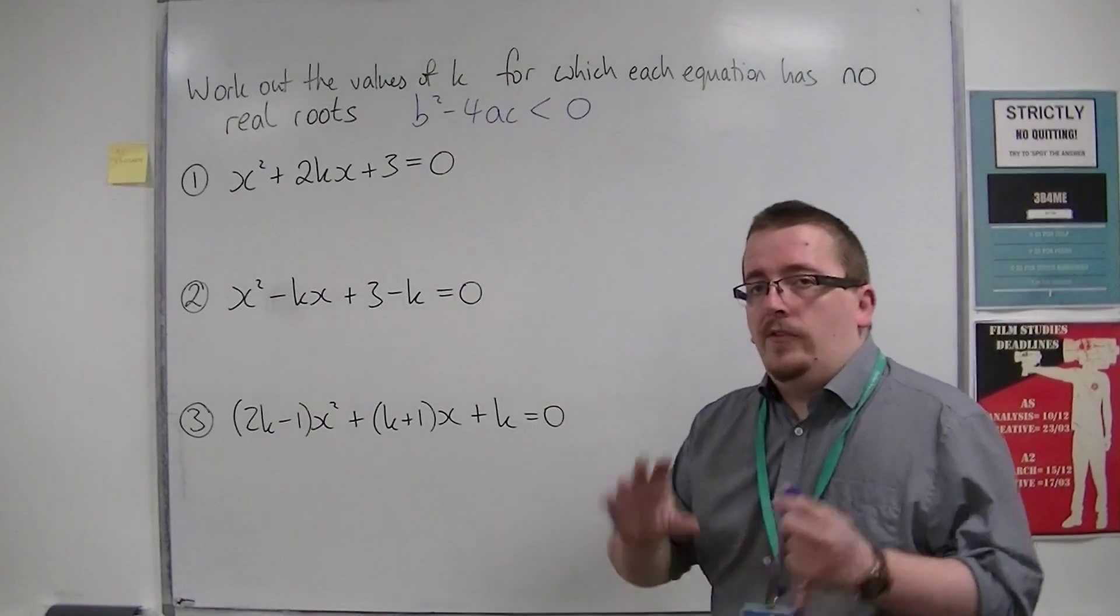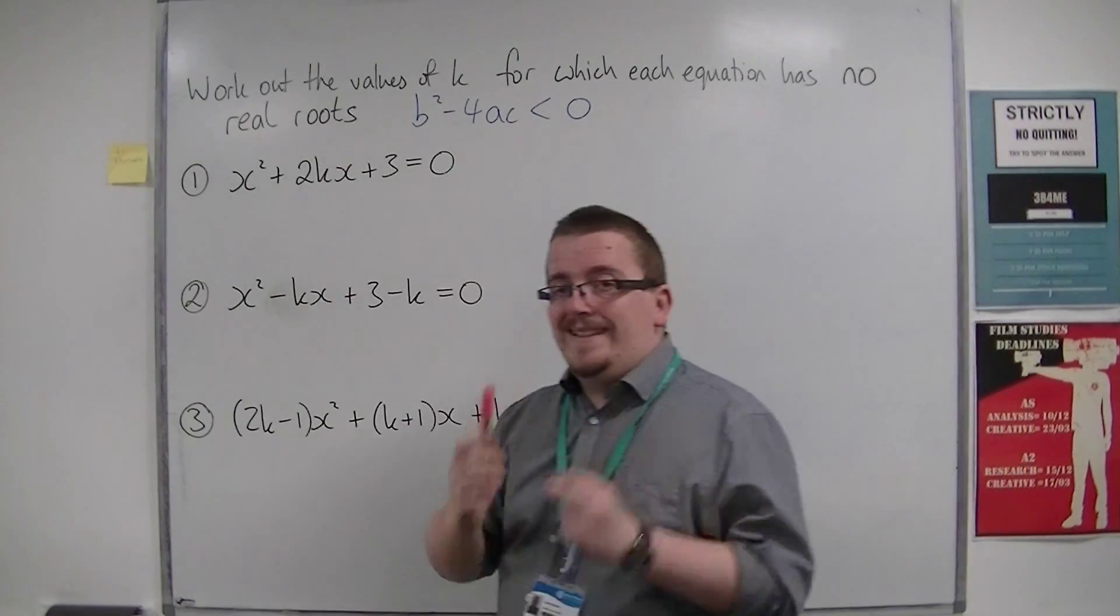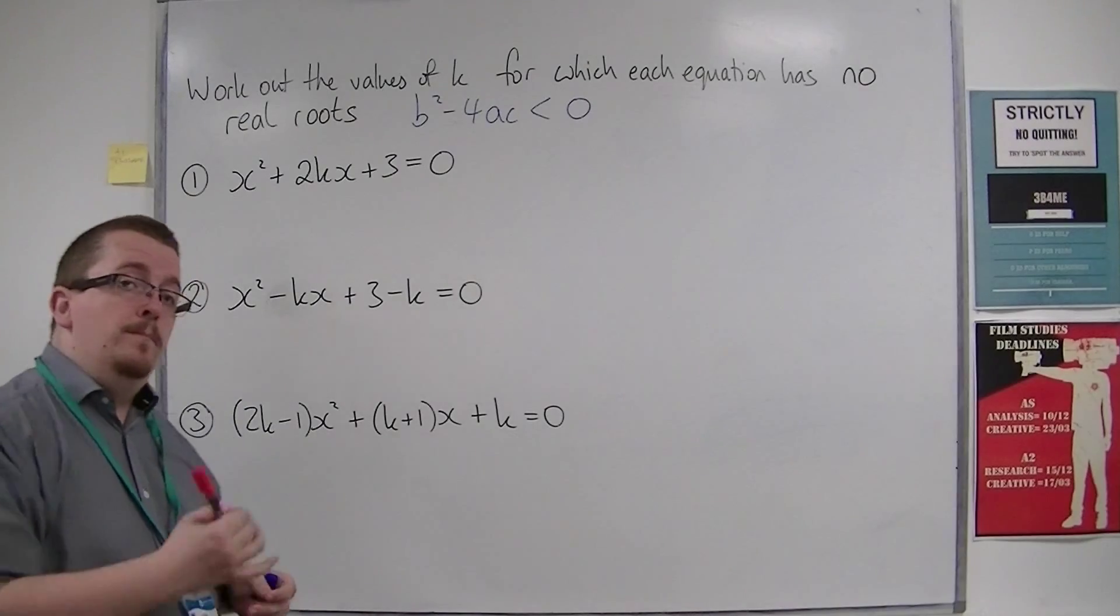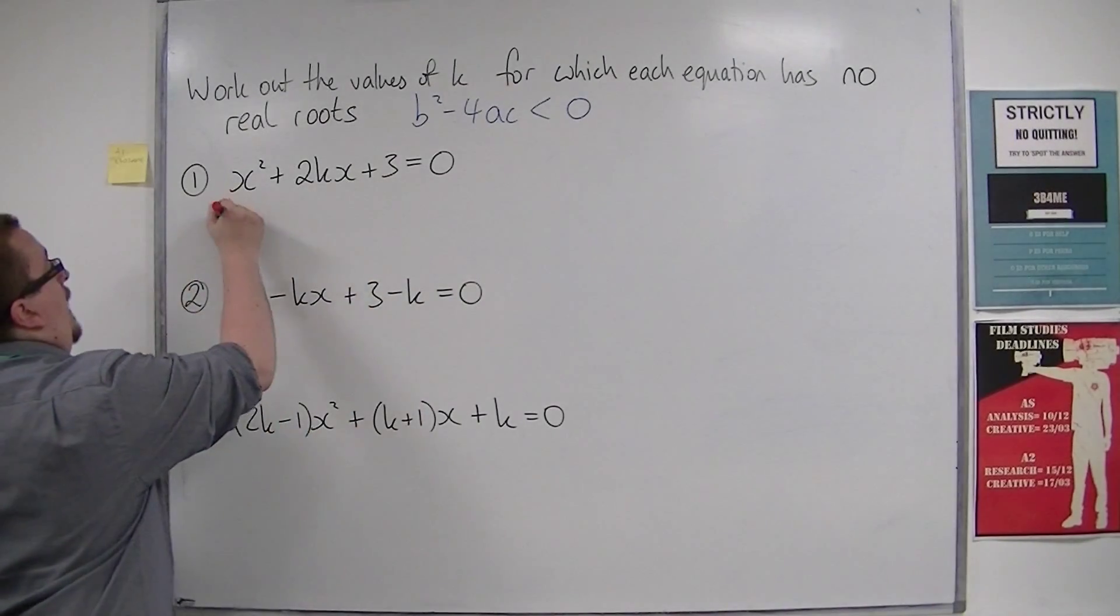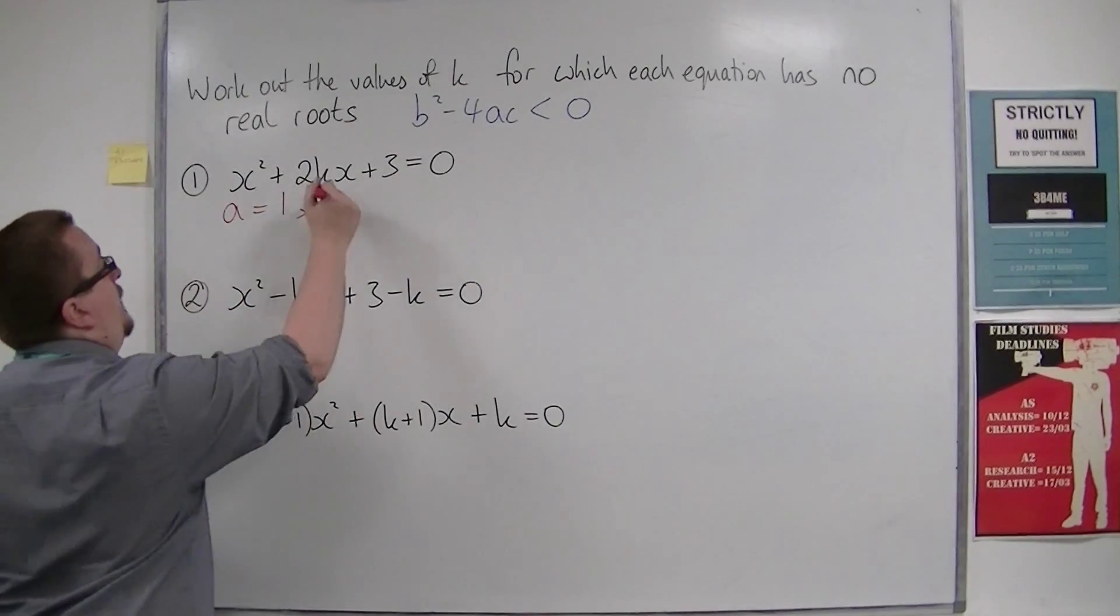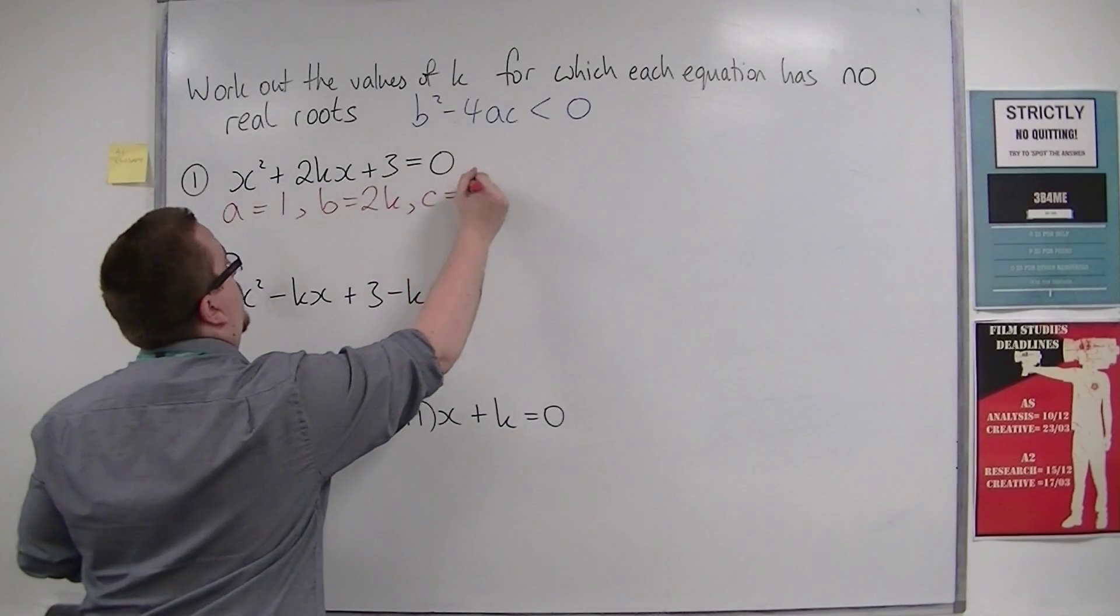We're going to go about this in exactly the same way. First of all, identify the values of a, b and c. Looking at this first example, a would be 1 (the coefficient of x²), b would be 2k, and c would be 3.